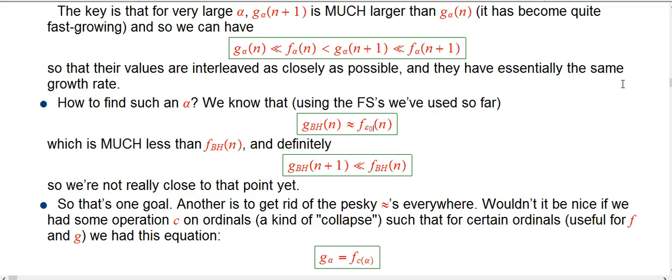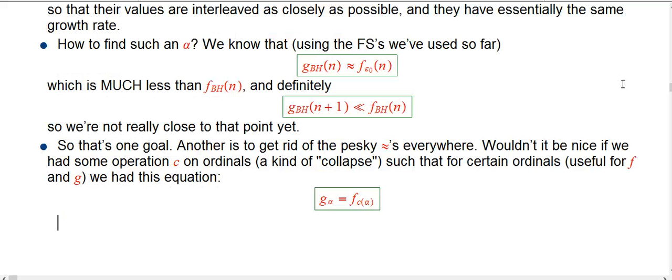So, for example, roughly speaking, we're going to have that the collapsed version of Bachman-Howard will exactly be ε₀, and then, and in fact, this will turn into an equation in the souped up, cool version of ordinal analysis and slow and fast growing hierarchies that I'm going to create for you. Okay, so let's assume we can do that for a sec.